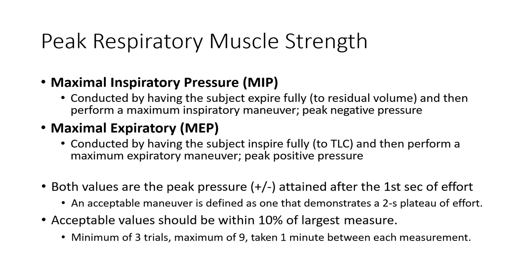The most common assessments you'll see when evaluating respiratory muscle performance are assessments of peak respiratory muscle strength. We use the terms respiratory muscles, inspiratory muscles, and ventilatory muscles interchangeably — referring to the diaphragm, intercostals, and related muscles. The two biggest measures are maximum inspiratory pressure (MIP) and maximal expiratory pressure (MEP).